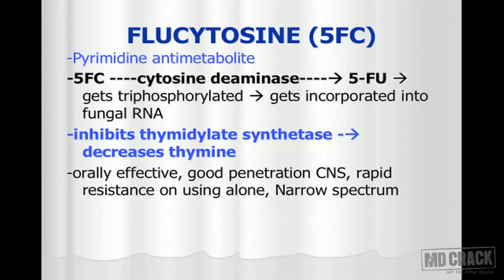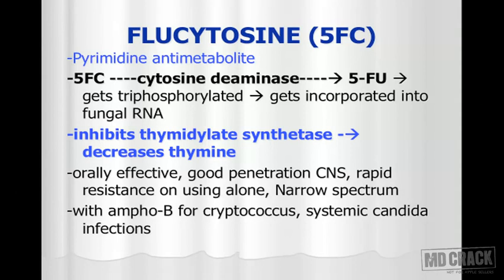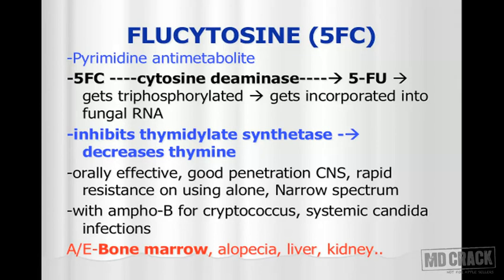5-FC inhibits nucleic acid synthesis. It is orally effective with good penetration of the CNS, but there is rapid resistance when used alone and it has a narrow spectrum of activity. Therefore, we use it with amphotericin B — especially in cryptococcal meningitis or systemic Candida infection. Combining with amphotericin B decreases the dose requirement of amphotericin B, minimizing its toxic effects and reducing the cost of treatment.